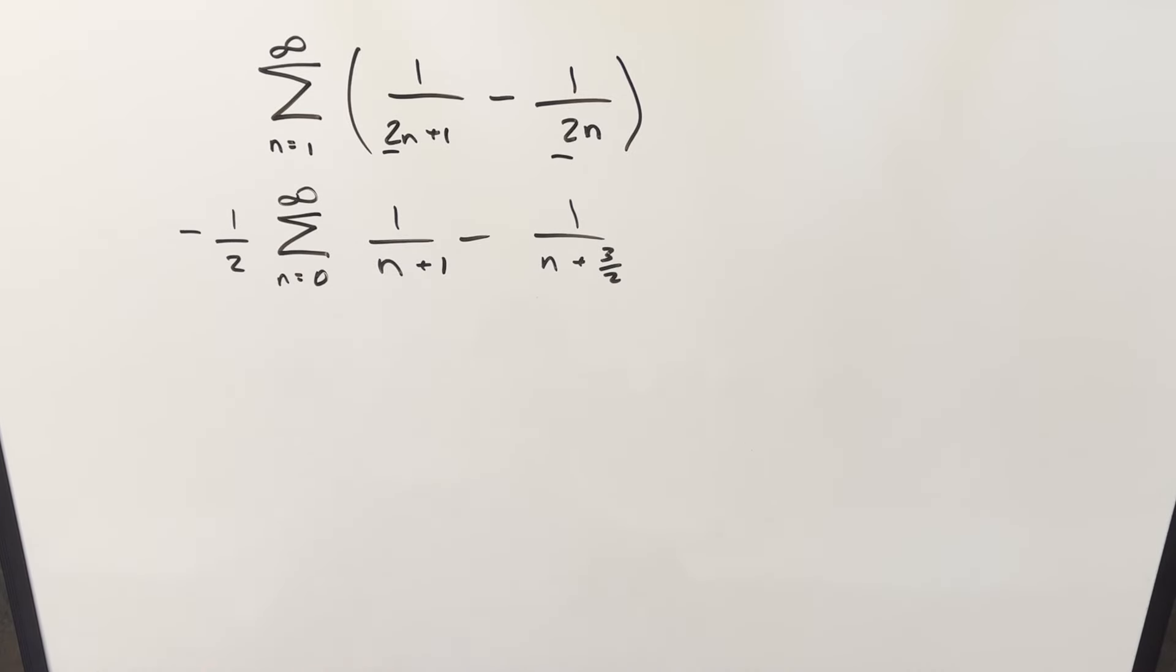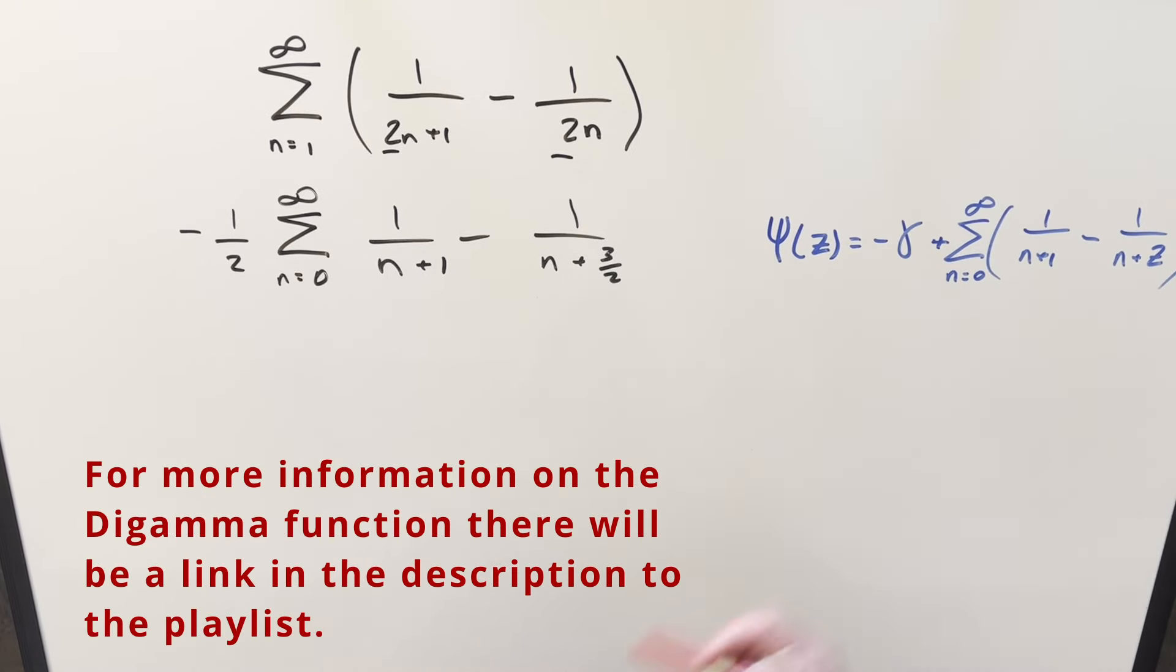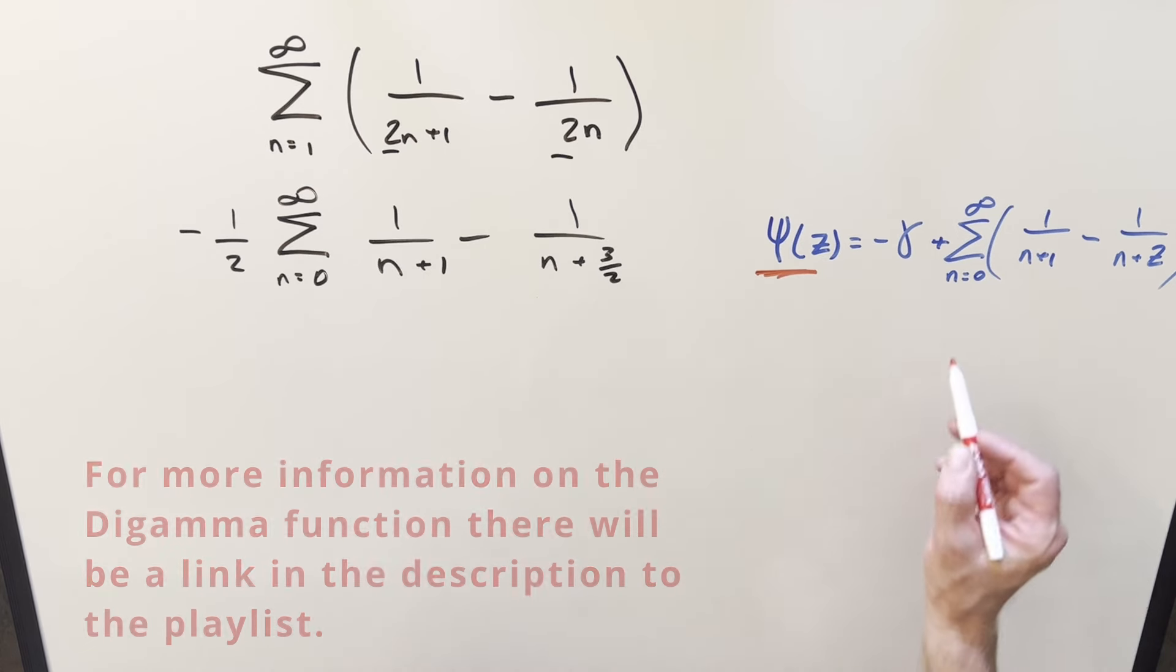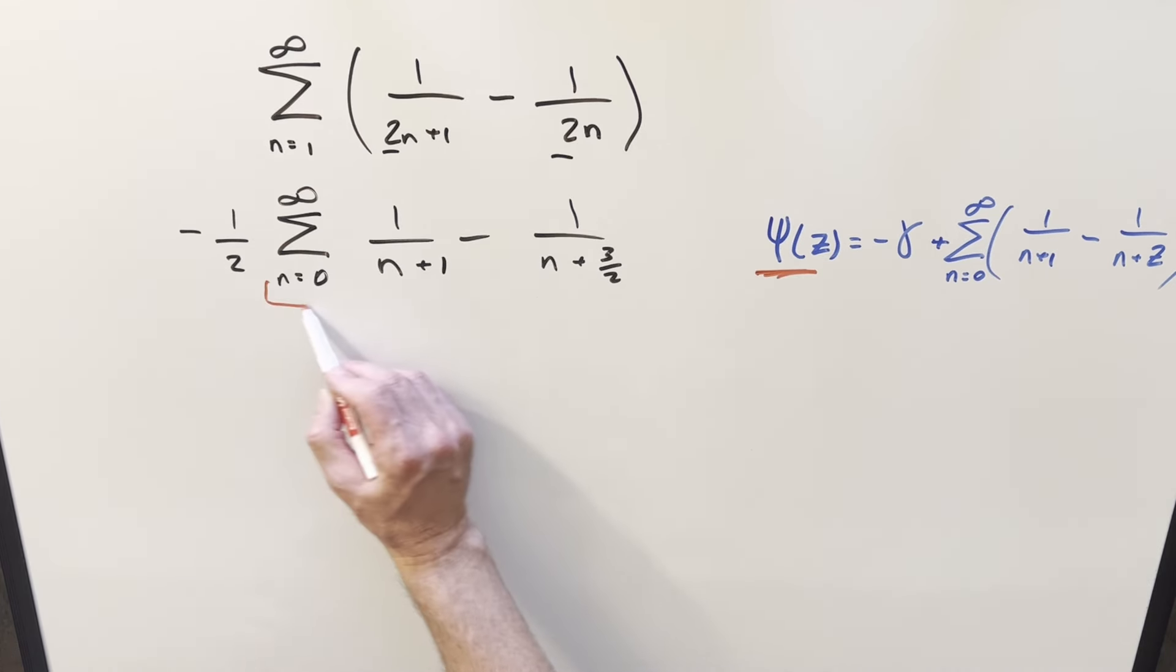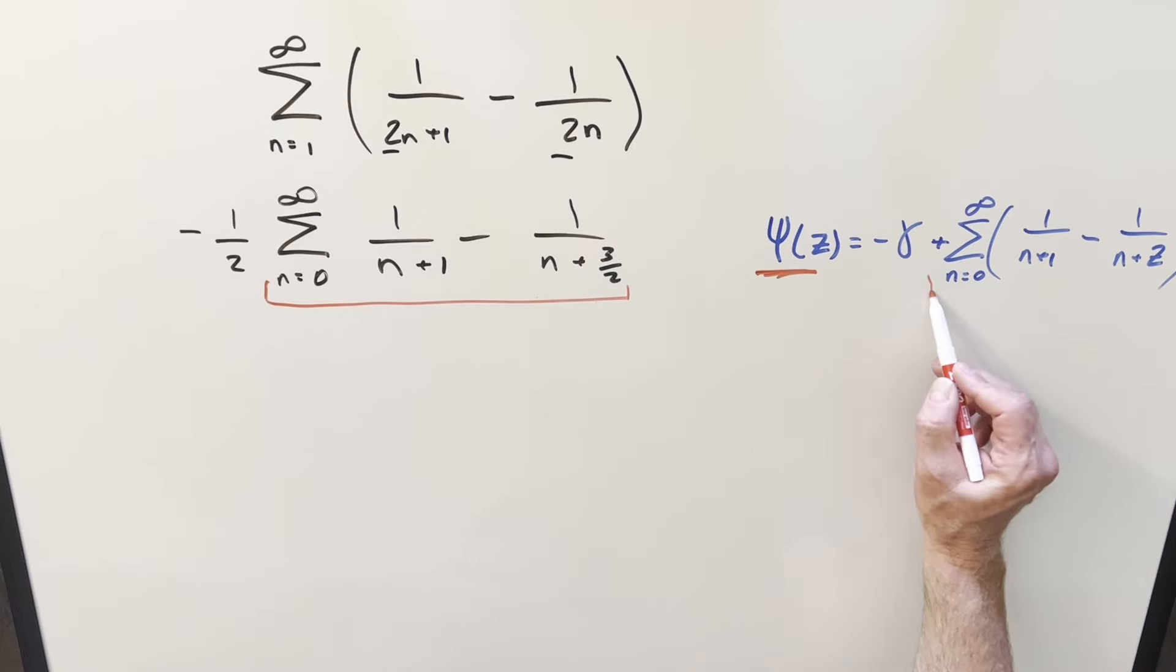But now the way this is set up here, we can use our series expansion for the digamma function on this in order to rearrange this whole thing. Let's look at that. So with this series expansion over here to the right for the digamma function, all I want to do is notice that what we have over here is really similar to what we have over here.